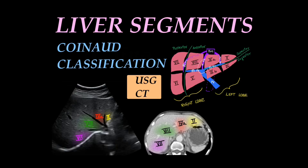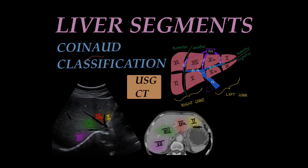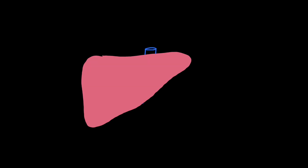Today we'll be learning about liver segments based on Couinaud classification, and we'll see how the segments look on ultrasound and CT. My name is Dr. Aishwarya. To begin with, we'll see how the liver was divided into right and left segments prior to Couinaud classification.